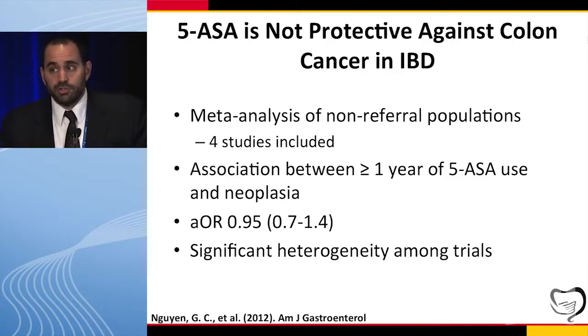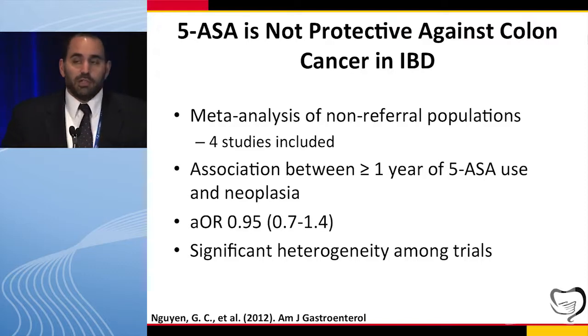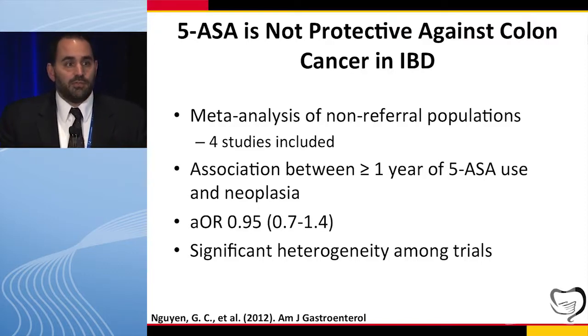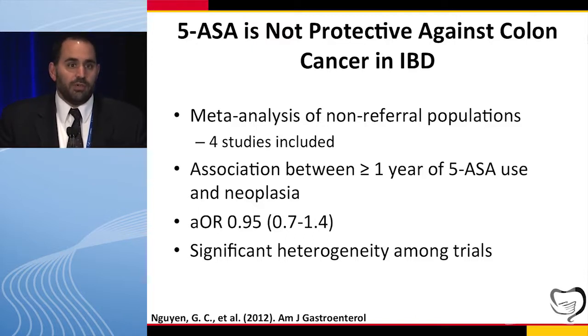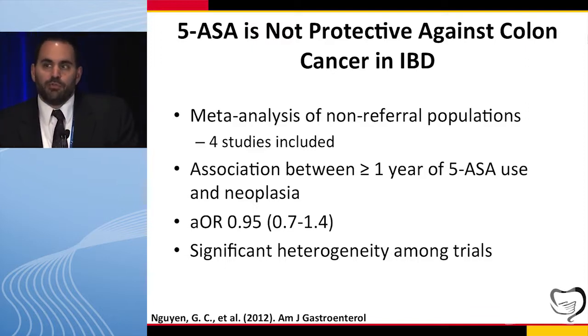Another area of controversy is whether you should be using 5-ASAs to prevent colon cancer. The Césanne study from France showed about a 50% reduction in colorectal cancer with 5-ASA. However, a meta-analysis by Jeff Wynn looked at four studies in non-referral populations and found no difference in the association between a year or more of 5-ASA and dysplasia, with a lot of heterogeneity between studies. When studies from referral centers were looked at, it was about a 40% reduction. So I don't think I can give you a definitive take-home point — there may be some benefit in referral practice, but in the community it doesn't appear to have an effect.